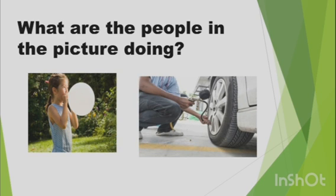Can you tell me children what are the people in the picture doing? If you see the first picture, a small little girl is blowing a balloon and in picture number two, a man is filling air in the car tire.